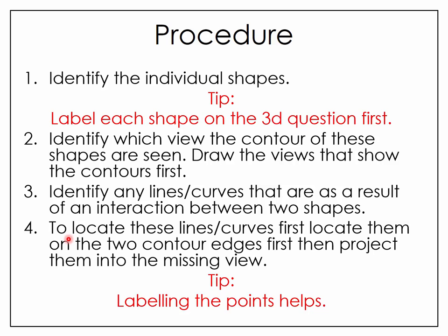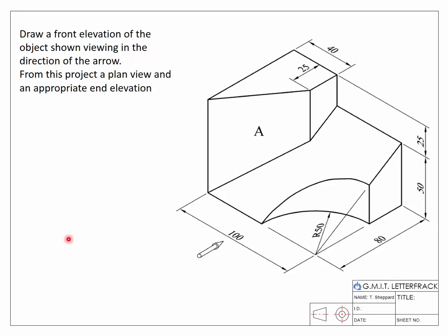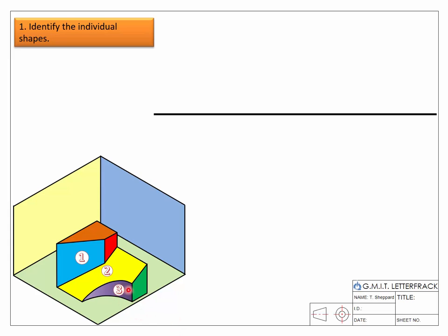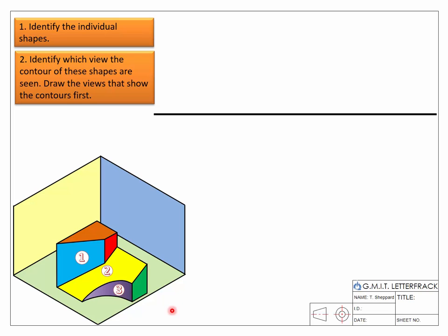Let's take an example — this is a past Junior Cert question. We have an object made up of a combination of different shapes. The first thing is to identify the individual shapes: we have a block shape which we'll call number one, a sloped portion which we'll call number two, and a curved piece taken away from the slope piece — so three different shapes all interacting with each other.